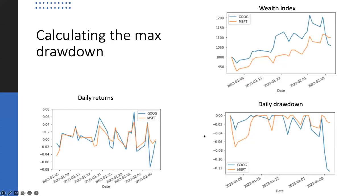So that's about it. Lastly, let's illustrate the calculation of the max drawdown. This will be covered later in our lab session. So first, we have the daily returns for Google and Microsoft. We know that this is the data for the first two months of 2023.